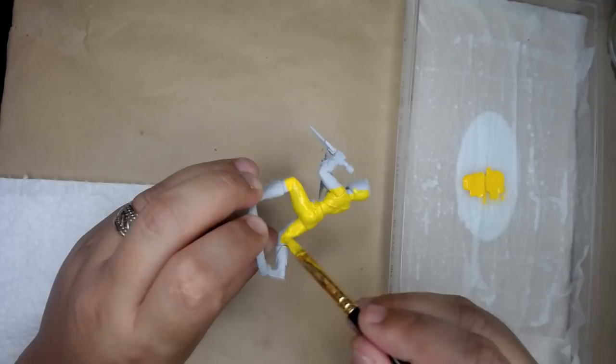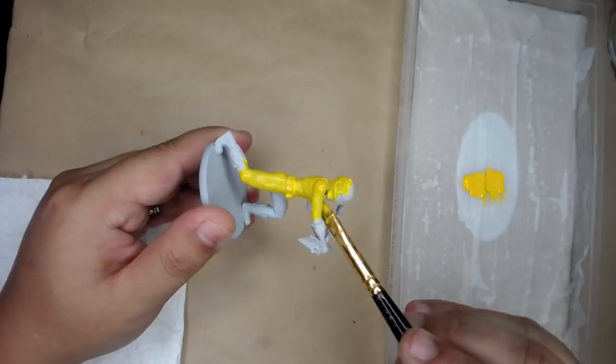You'll want to thin your paints to the consistency of somewhere between milk and cream on your wet palette. I show you how to make it in the Pumpkin Rapper video, so if you're curious, check that out.